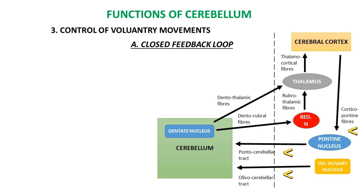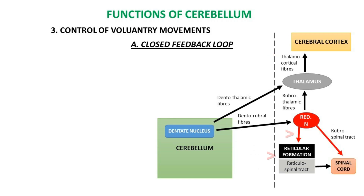The paravermal area is also connected to the deep cerebellar nuclei: nucleus interpositus and nucleus dentatus. Efferents from the dentate nucleus pass through the superior cerebellar peduncle, cross the midline, and divide into two groups: dentothalamic fibers, which reach the motor cortex via thalamocortical fibers, and dentorubral fibers, which synapse in the red nucleus of the opposite side. The rubrothalamic tract terminates in the thalamus and reaches the cerebral cortex via thalamocortical fibers. The rubroreticular tract terminates in the reticular formation, which projects to the spinal cord via the reticulospinal tract. The rubrospinal tract directly projects from the red nucleus to the spinal cord.